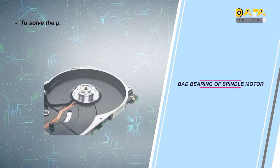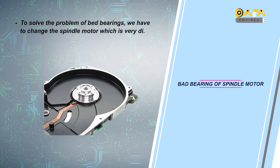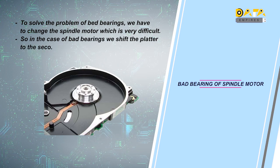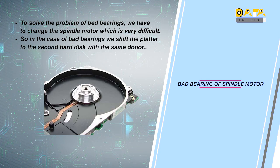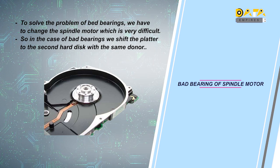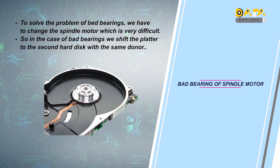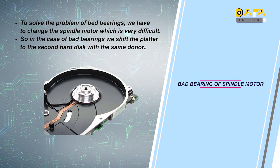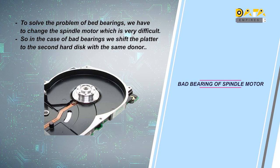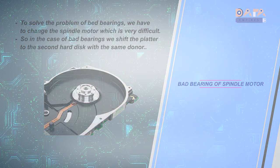Bad Bearing की Problem को Solve करने के लिए हमें Spindle Motor को Change करना होता है, जो काफी Difficult होता है. इसलिए Bad Bearing के Case में Platter और Head को Same Donor वाली दूसरी Hard Disk में Shift करते हैं. इसके लिए Special Tools की Requirement होती है — Platter Exchanger Tool और Head Replacement Tool की इसमें Requirement रहती है.